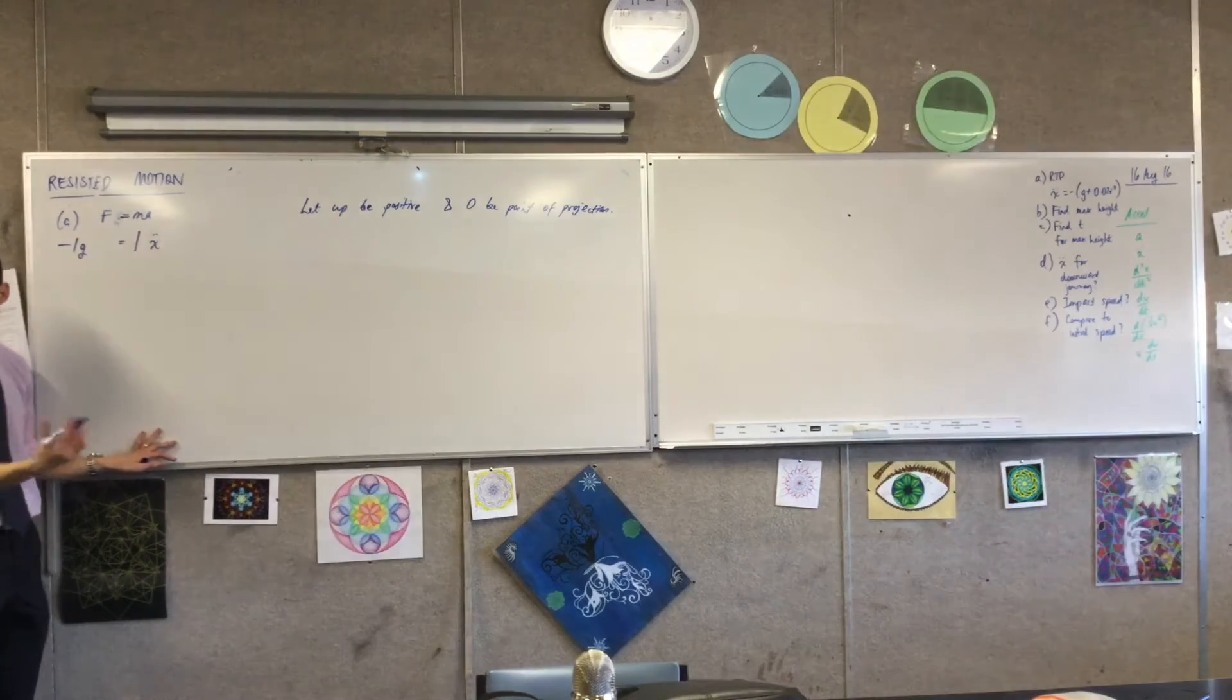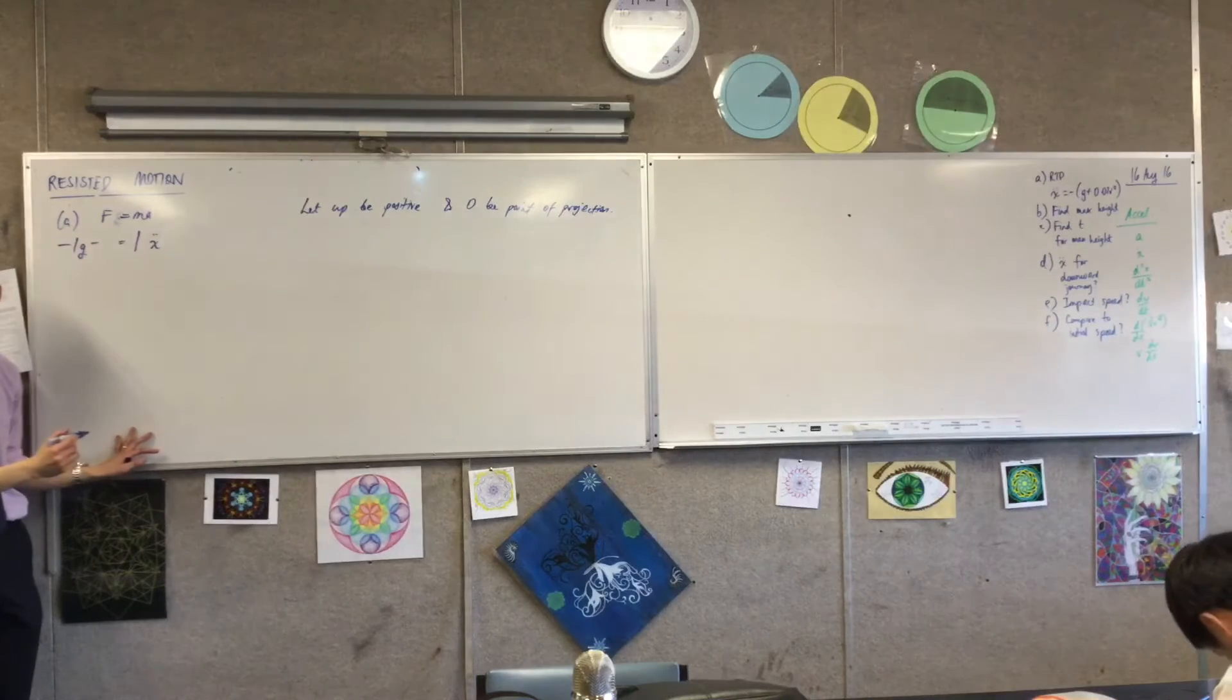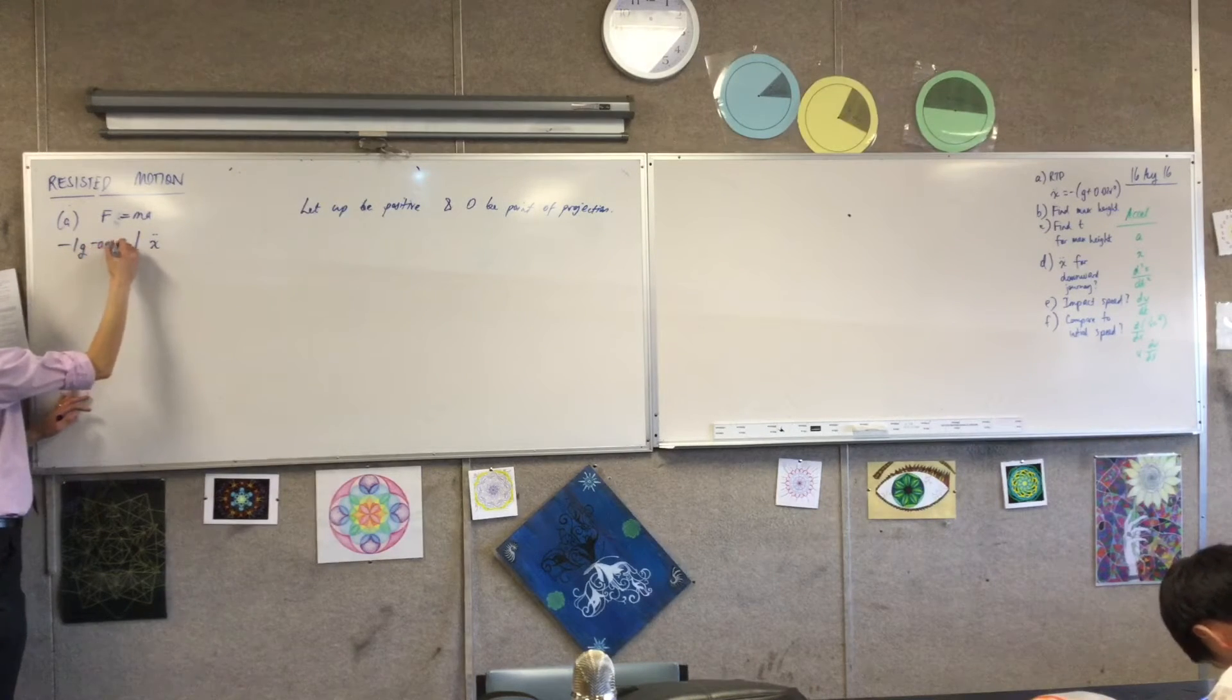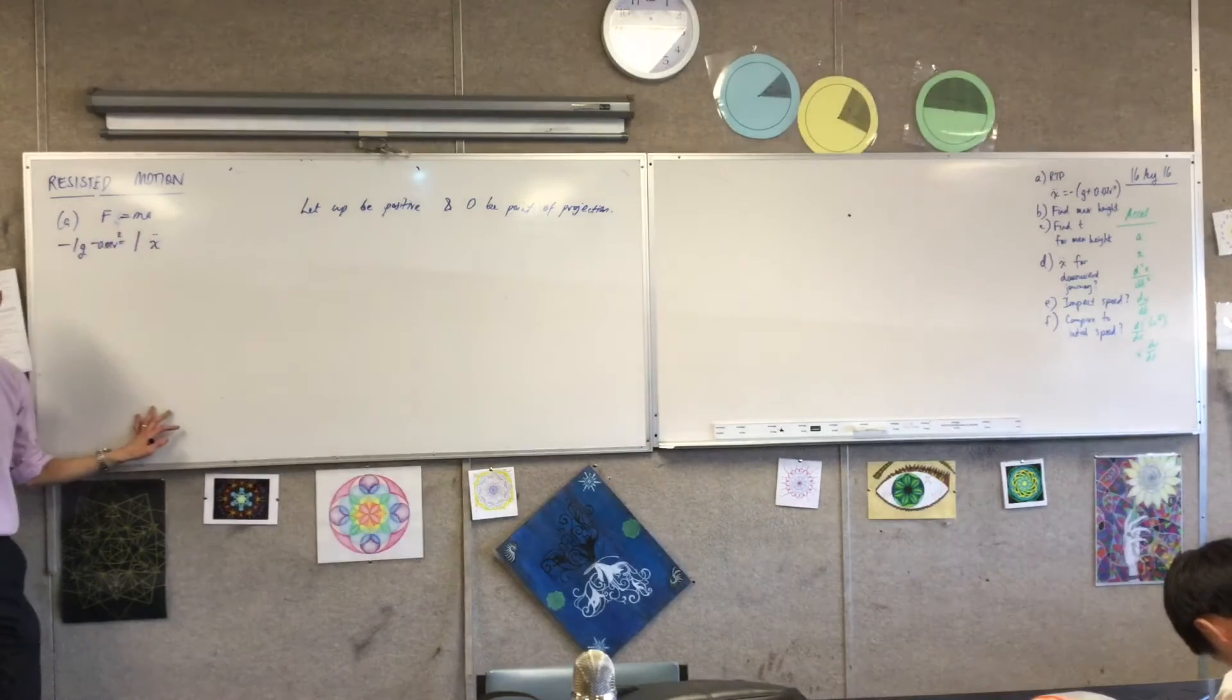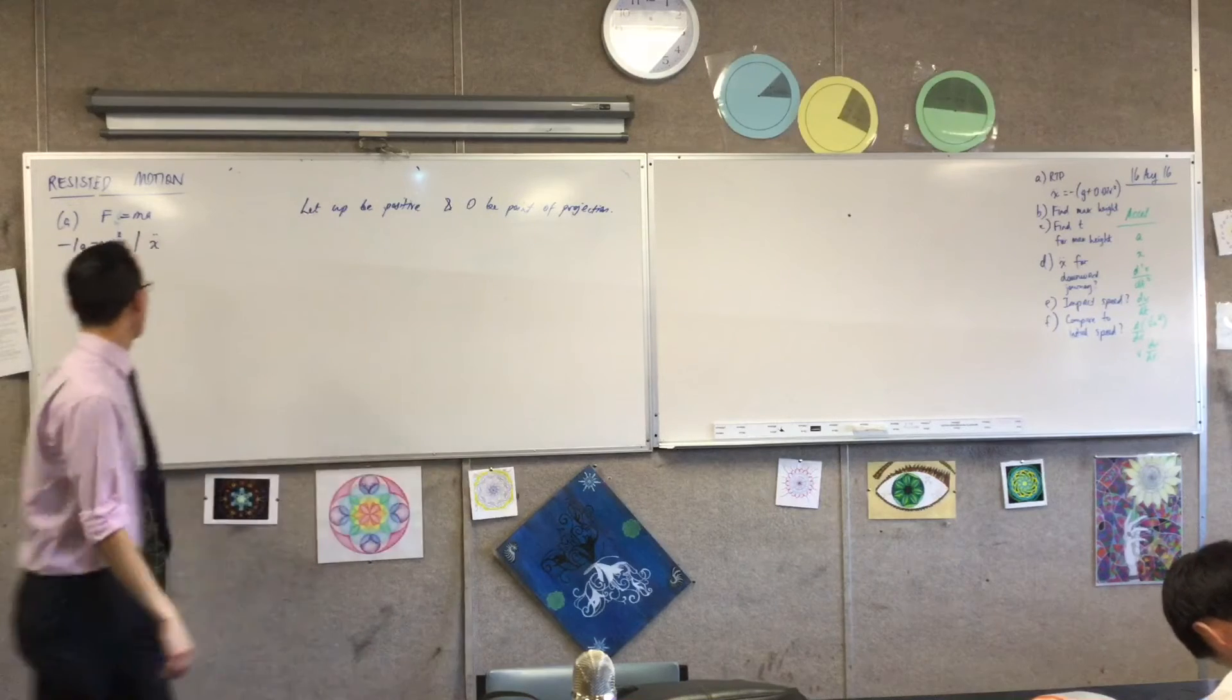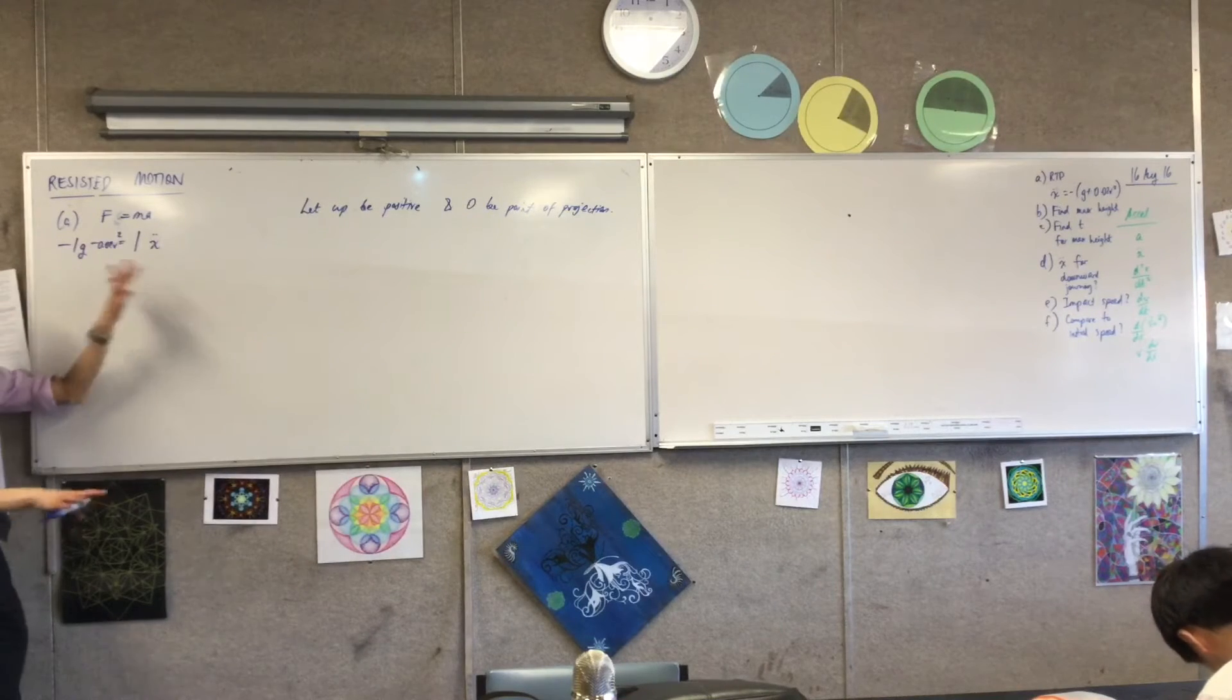So I'm going to say over here, negative... The first one was gravity. Did they define gravity for us, or did they just leave it as G? It's just G. So this is 1G. And then there's the other negative thing, air resistance. So it's negative 0.02G. No, it's just 0.2.